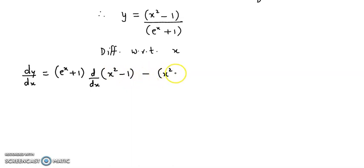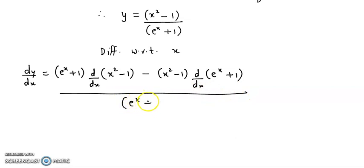(x²-1) times the derivative of e^(x+1), all divided by (e^(x+1))².